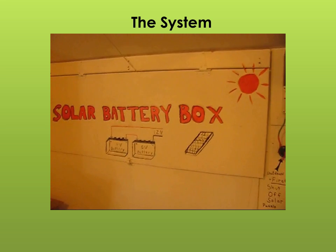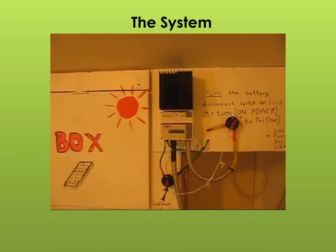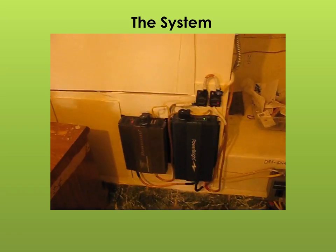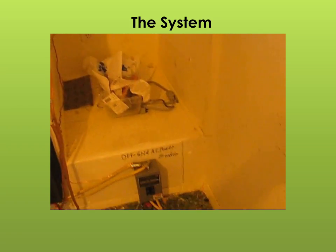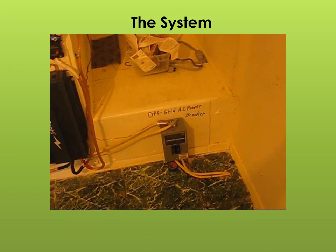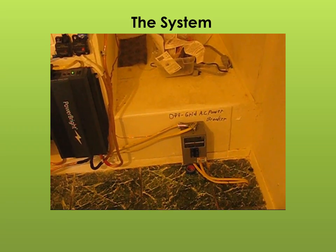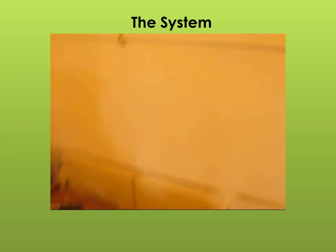Now this right here is the solar box. It has the controller, the inverters, trippers, and also the AC power trippers - 15 amp trippers and all in there.